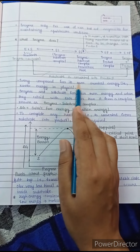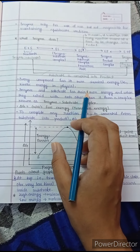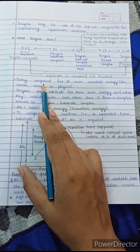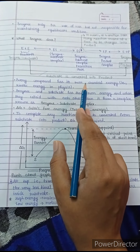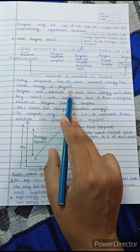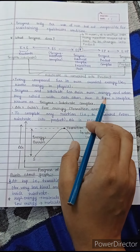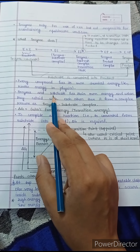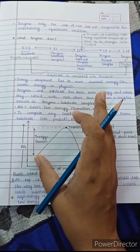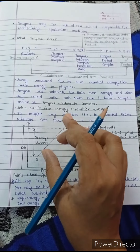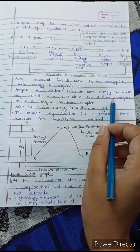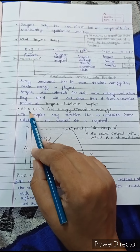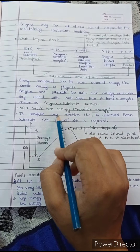Every compound has its own chemical energy. Just as in physics every molecule has its own kinetic energy, similarly all compounds have their own chemical energy. Enzyme and substrate also have their own energy, and when they collide with each other and try to form a bond, they form a complex known as the enzyme-substrate complex. Then we have Gibbs free energy — delta G — which we can also call transition energy.